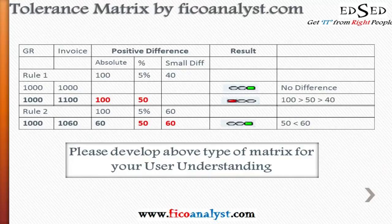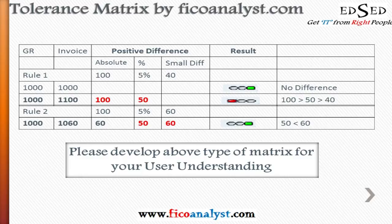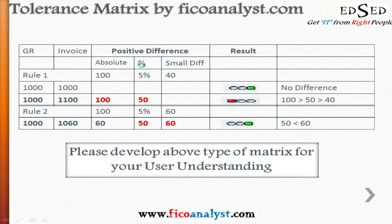There is a matrix developed to help users understand exactly what is happening. There are three types of tolerance limits you set: absolute value, percentage, and small difference. These three fields are enabled in the tolerance configuration, and they work together to determine whether a particular tolerance is triggered or the limit is allowed or not allowed.